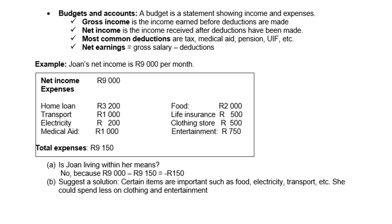Suggest a solution: certain items are important such as food, electricity, and transport. She could spend less on clothing and entertainment.